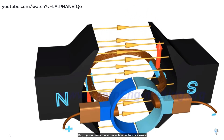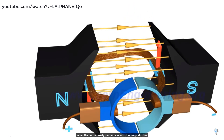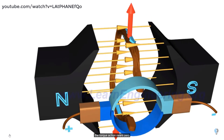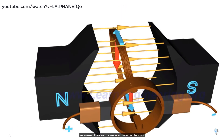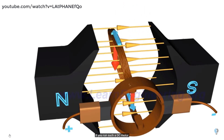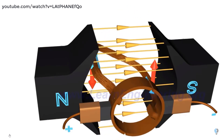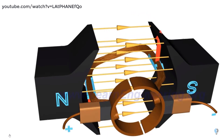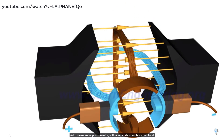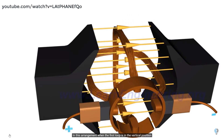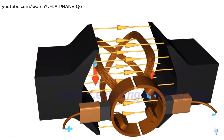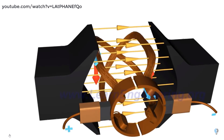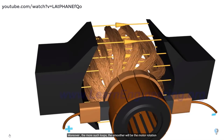However, when the coil is nearly perpendicular to the magnetic flux, the torque nears zero, resulting in irregular rotor motion. The trick to overcoming this is to add one more loop to the rotor with a separate commutator pair. When the first loop is in the vertical position, the second loop is connected to the power source, so a motive force is always present. Moreover, the more loops added, the smoother the motor rotation.